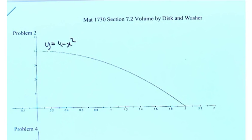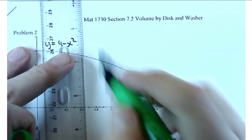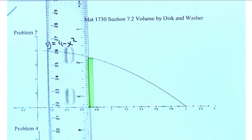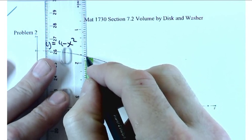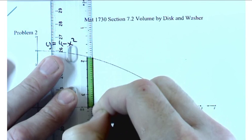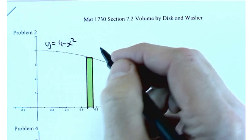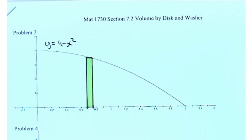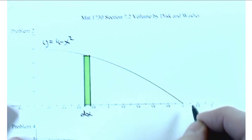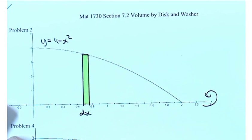Our approach is going to be the disk method. What we'll do is take a little slice, much like we did with our work for area problems, and see what happens to this one slice as we rotate it around the x-axis. The thickness of that slice is DX.